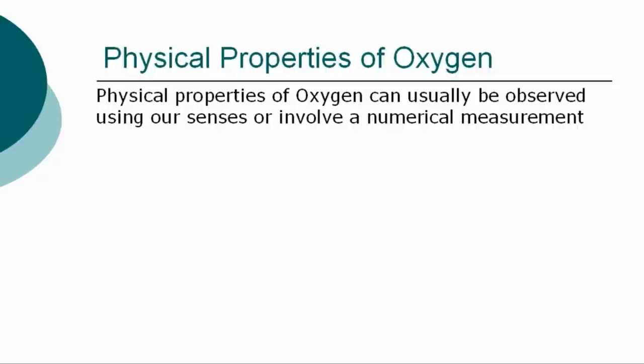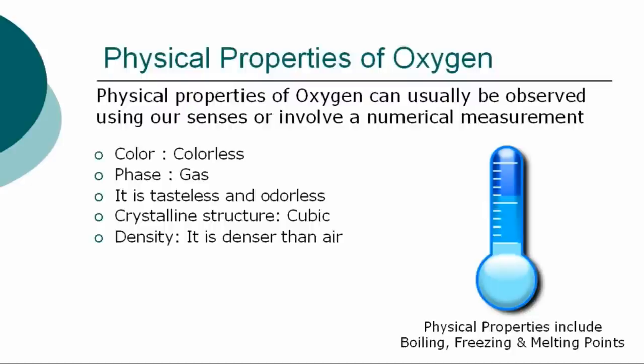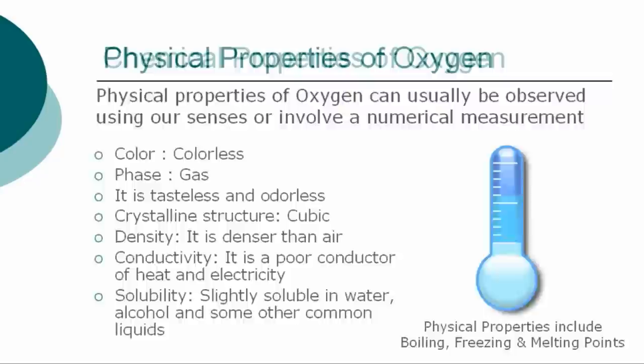The more specific physical properties of oxygen can usually be observed using our senses or involve a numerical measurement, such as determining its boiling, freezing, and melting points. The physical properties of oxygen are: Color - Colorless, Phase - Gas. It is tasteless and odorless. Crystalline structure - Cubic. Density - It is denser than air. Conductivity - It is a poor conductor of heat and electricity. Solubility - Slightly soluble in water, alcohol, and some other common liquids.